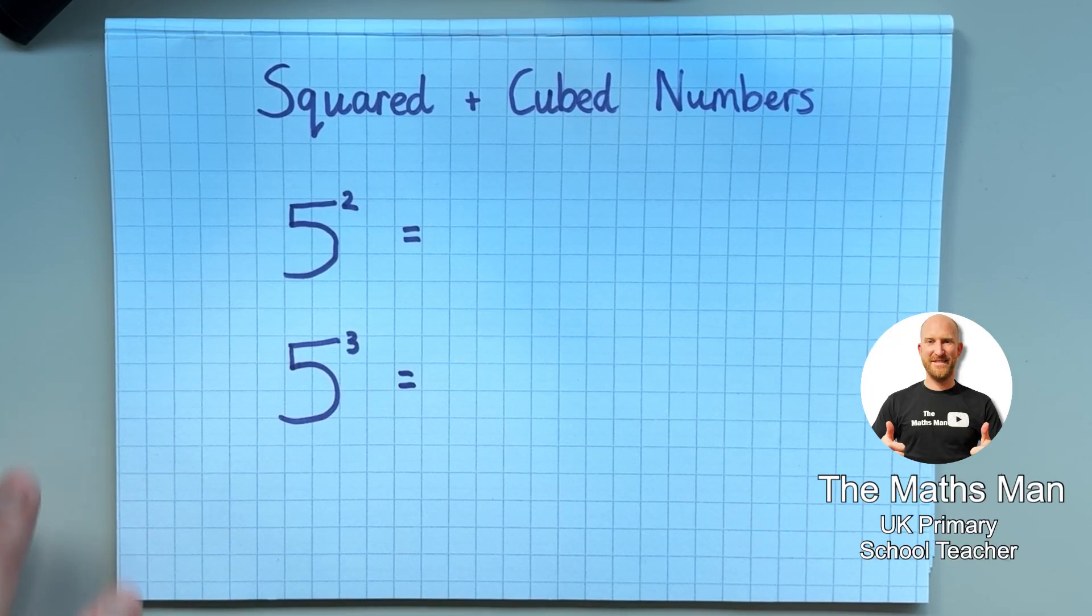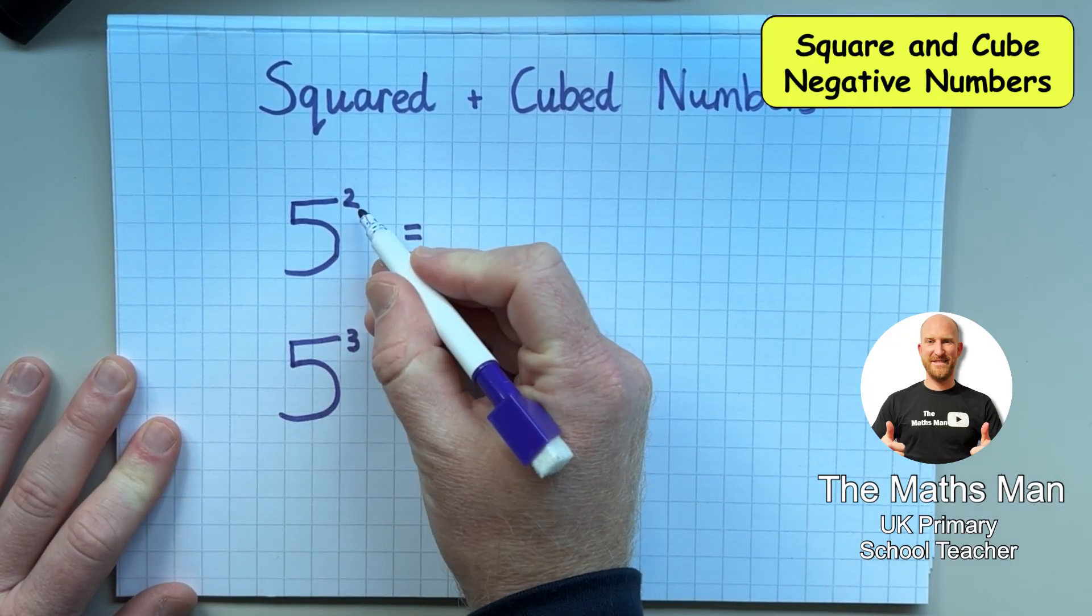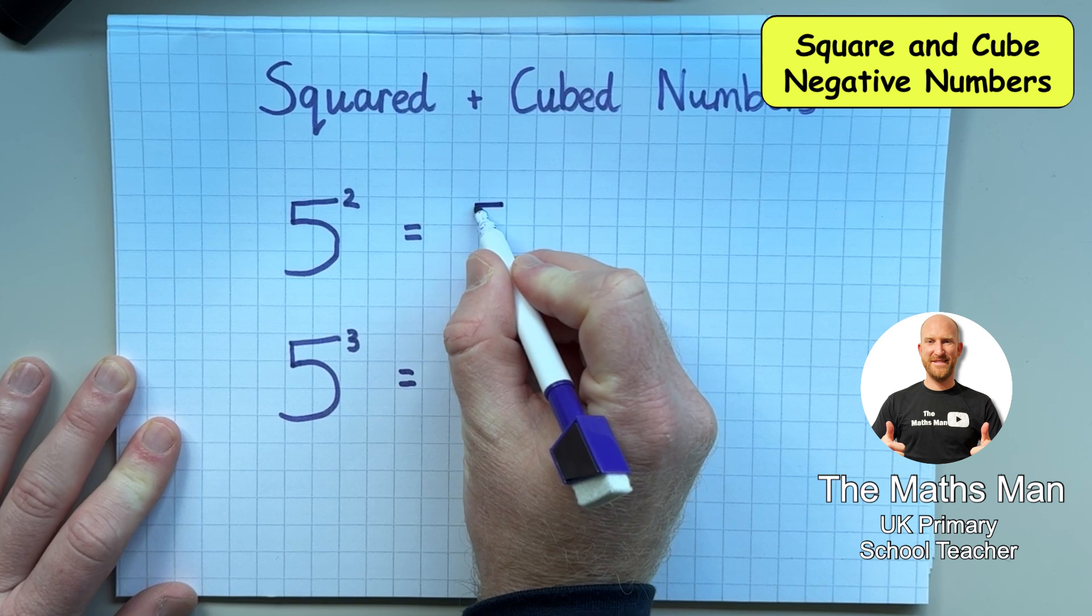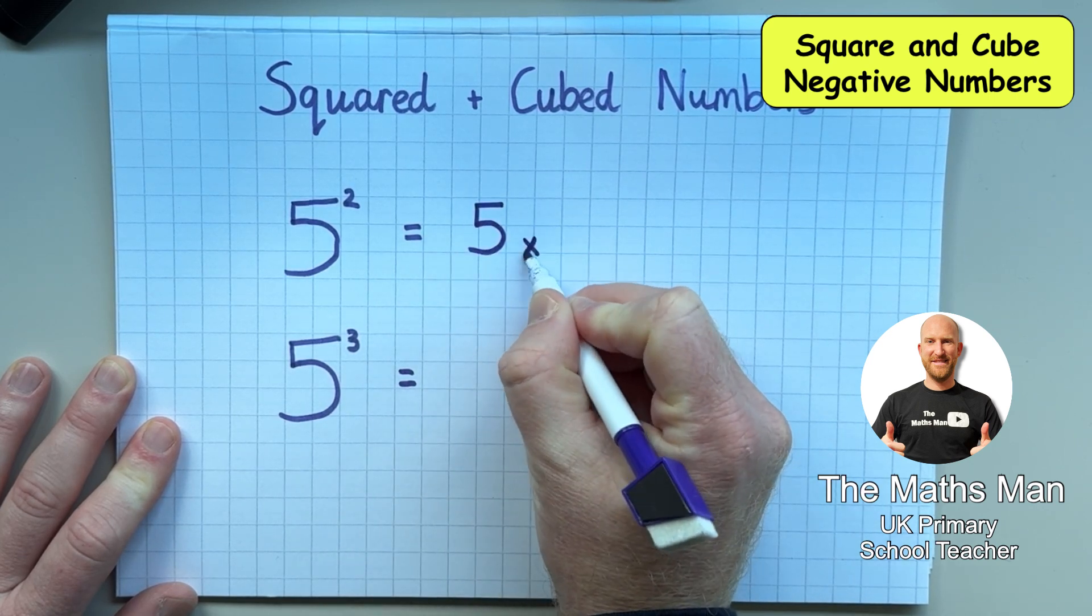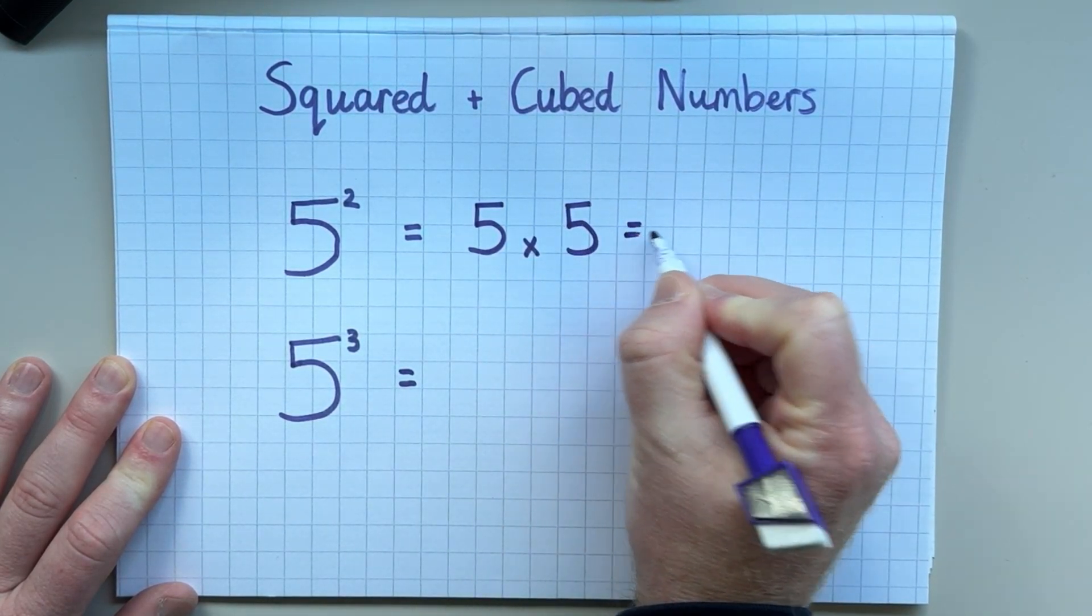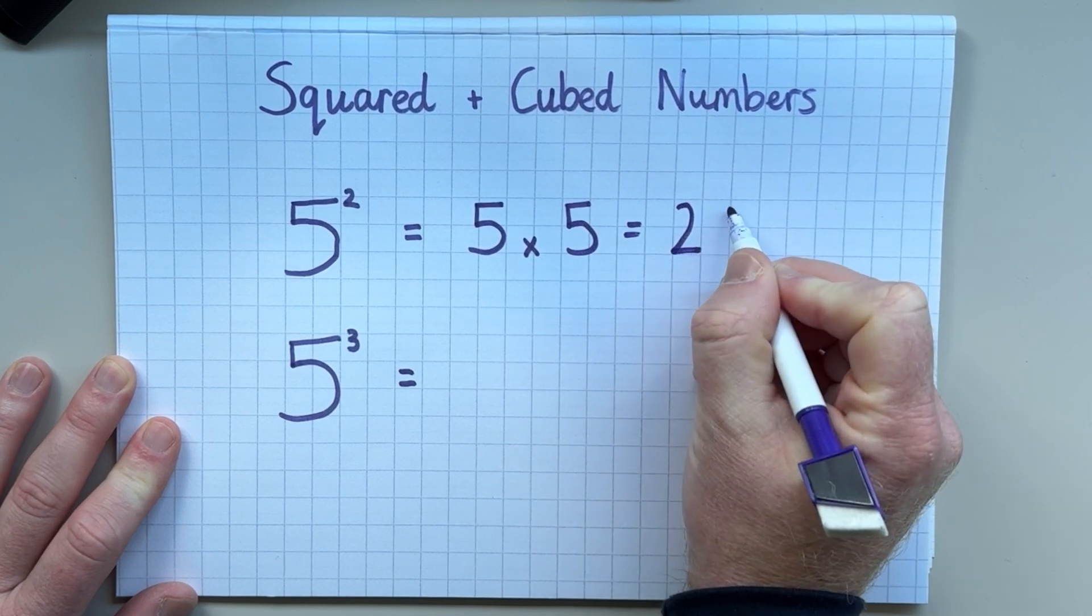Hopefully, if you're watching this video, you already know that 5 squared means to multiply 5 by itself. And hopefully, you'll know the answer's 25.